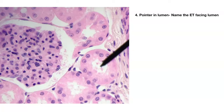Number four — easy. Look at those nice round nuclei, one layer thick. This is simple cuboidal.